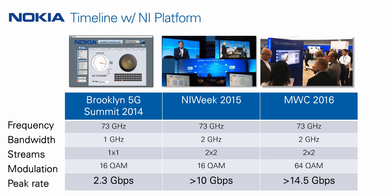Things developed further from there. By NI Week 2015, Nokia took their millimeter wave system from 1×1 SISO — one antenna on each end — to 2×2 MIMO, achieving 10 gigabits per second, which was the world record at the time. Since then they pushed things even further, and at Mobile World Congress 2016 they brought the same platform back after even more development and showed they could now achieve 14.5 gigabits per second.